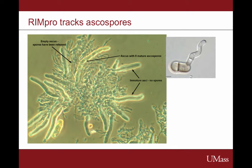At the heart of RIMPRO is an imaginary set of 10,000 ascospores that start out in leaves on the orchard floor, mature, and are released. Most of them mature and are released, but not all. Some land on leaves and some don't. When they land on leaves, they may or may not infect. So it follows the fate of those 10,000 spores and estimates how intense an individual infection period is based on the number of spores available and the number that managed to infect. Here we see some ascospores, and here's a germinating ascospore — when that hyphal tip gets inside an apple leaf, you have infection.